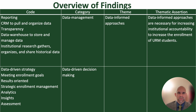An overview of my findings revealed the emergence of five themes: data-informed approaches, meeting students where they are, exposure and access to STEM experiences, cultural responsiveness, and holistic and inclusive recruitment. Data-informed approaches are necessary for increasing institutional accountability to increase the enrollment of URM students, informed by the categories of data management and data-driven decision making. These approaches optimize data sharing, strategic planning, and institutional accountability, ensuring alignment with URM enrollment goals.